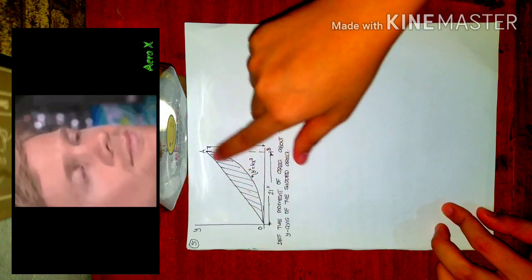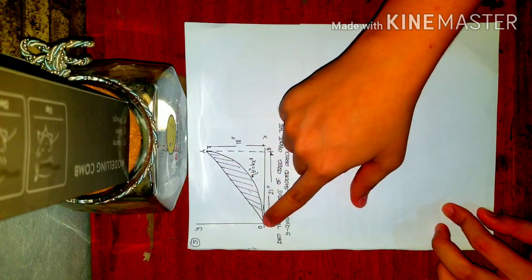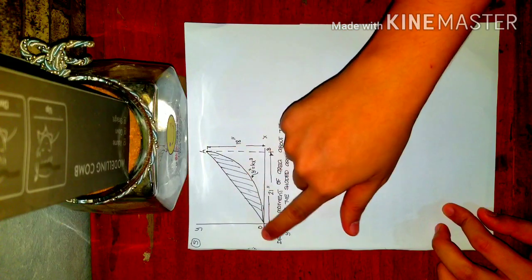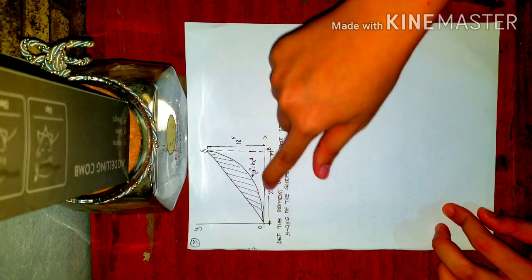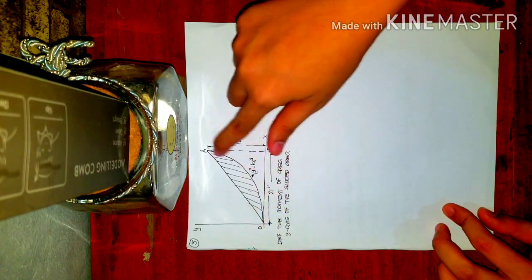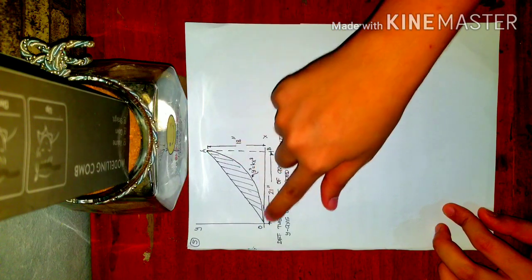So you have this shaded area. How do you form this shaded area? You have a triangle here, and then you subtract the area of the spandrel or parabola.